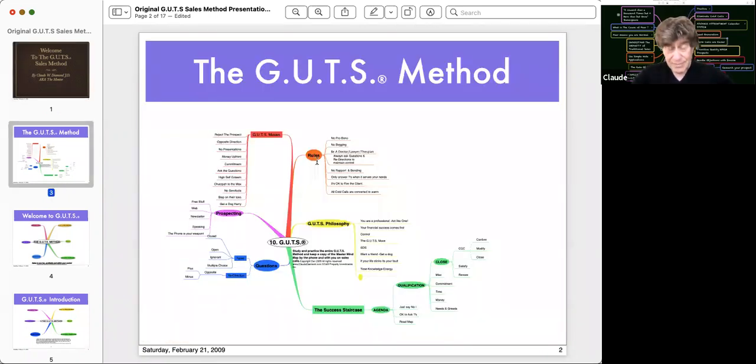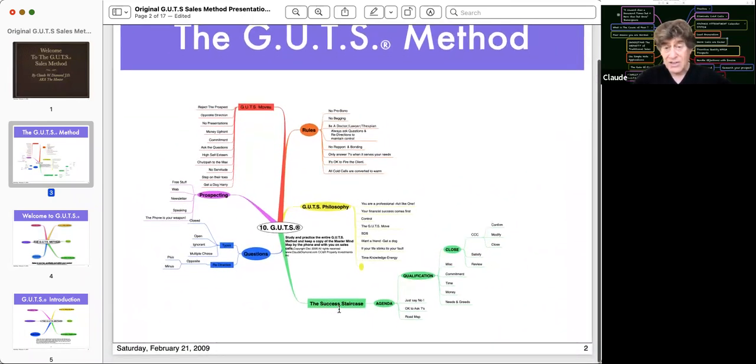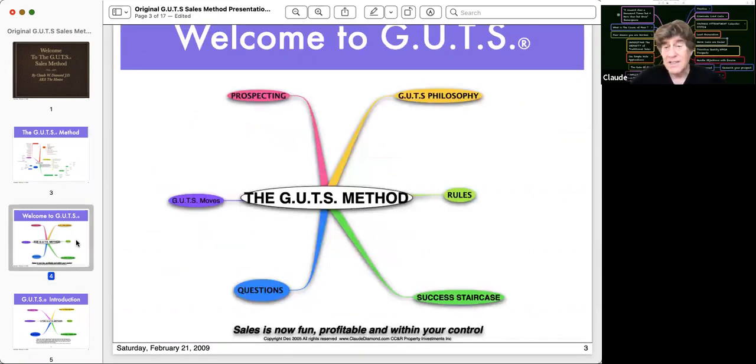Here's our first mind map. And I have rules of guts, the different moves, prospecting, questions, and the very important success staircase. This is what started it all. Agenda Qualification Closed, or as I like to say, Commitment Closed. So welcome to the gut sales method.